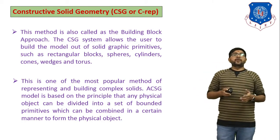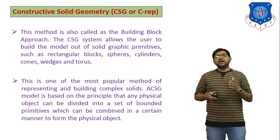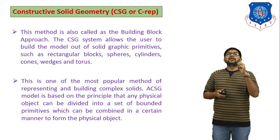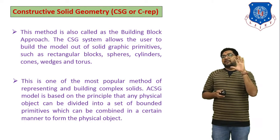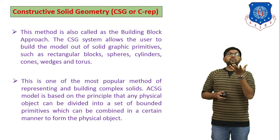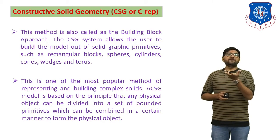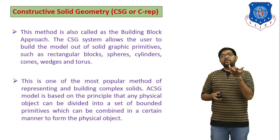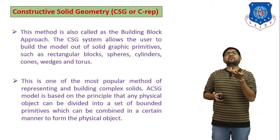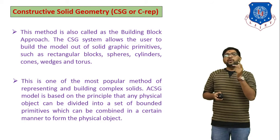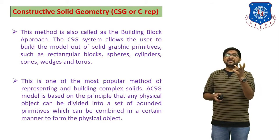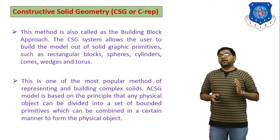In Constructive Solid Geometry, we have available some types of 3D objects like torus, cone, box, block, and cylinder. In that case, you have to just give input data. For example, if you want to generate a cylinder, you have to give the value of the radius and the length of the cylinder. If you give two input values, you can generate one 3D object directly. That is the method of Constructive Solid Geometry.